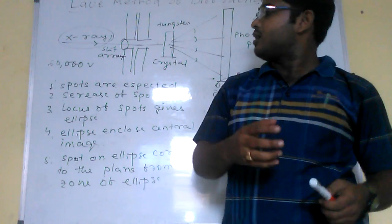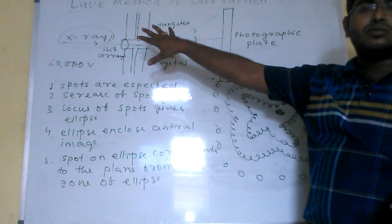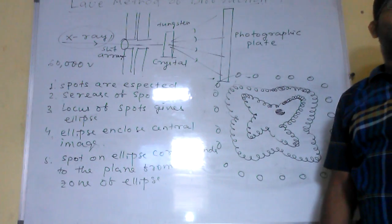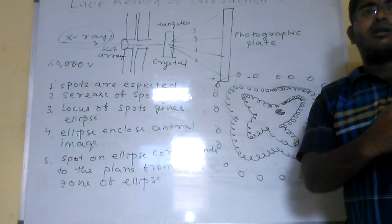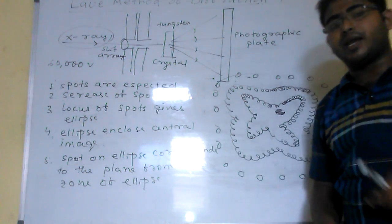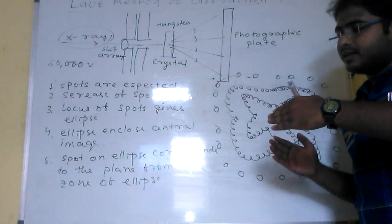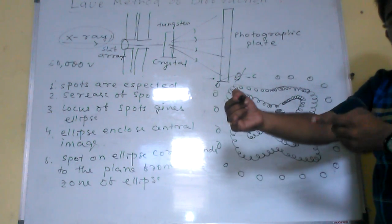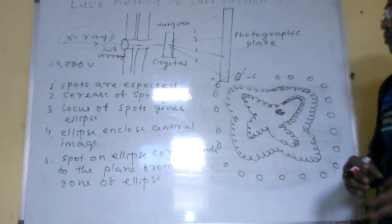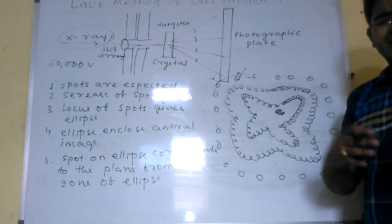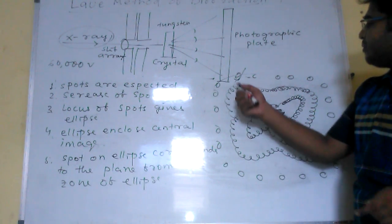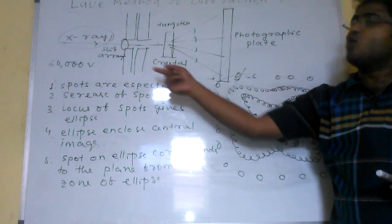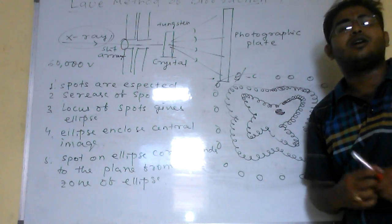Last but not least, we cannot use the Laue method to determine the crystal structure in the usual manner. Why? Because since there are a wide range of wavelengths, there may be radiation or reflection in different orientations from the same plane. That means we will get waves for a particular spot from the same plane, but the waves are many in number — more than one wave will fall on a single spot. As a result, we cannot determine the intensity of a single wave at a single spot. Hence, determination of crystal structure using the Laue method of diffraction is quite difficult.